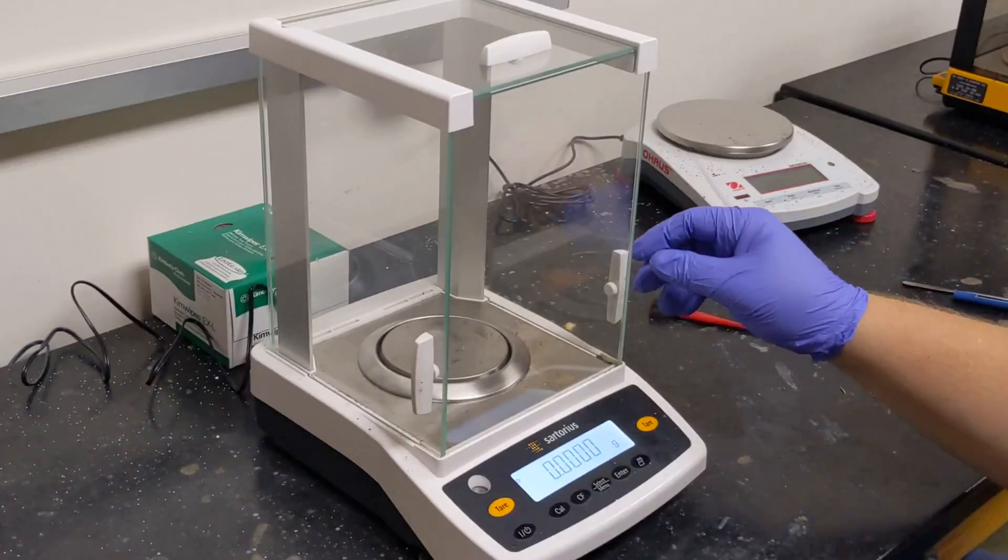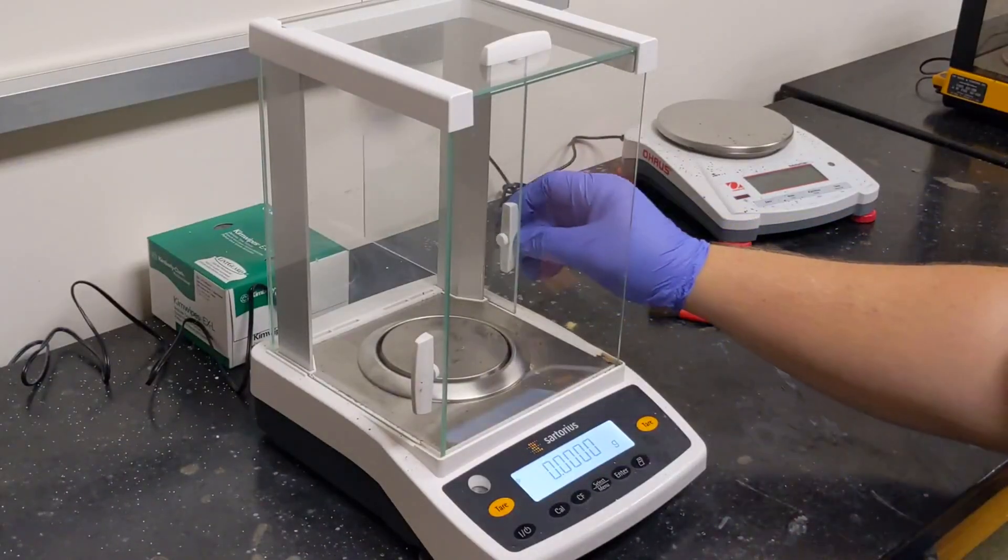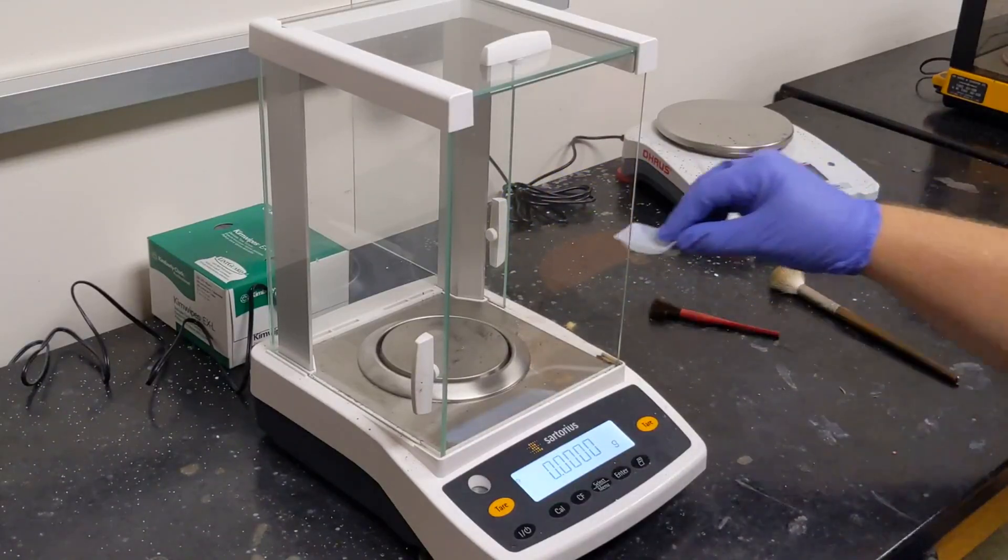We'll start by opening the door to the balance. It slides along a track, and then we will add a weighboat.